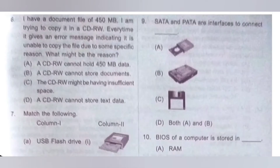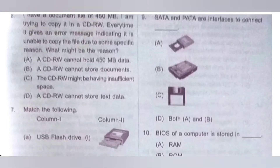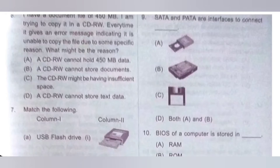Sixth question. I have a document file of 450 MB and I am trying to copy it to a CD-RW (read-write). Every time it gives an error message indicating it is unable to copy the file. What might be the reason? A) A CD-RW cannot hold 450 MB of data; B) A CD-RW cannot store documents; C) The CD-RW might be having insufficient space; D) A CD read-write cannot store text data. The correct answer is option C — it gives an error due to insufficient space.